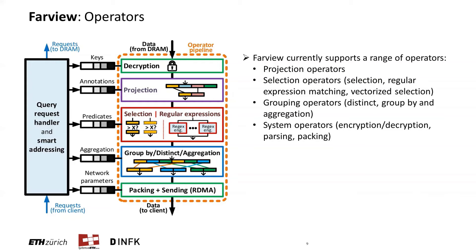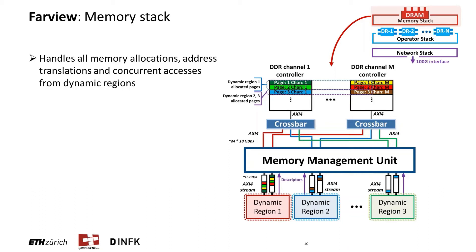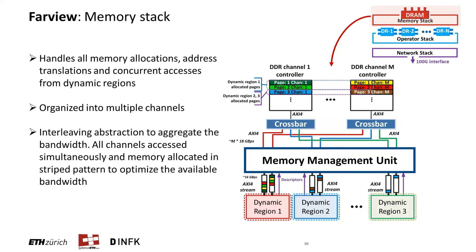The memory stack implements the actual buffer pool using the onboard DRAM attached to the FPGA. It handles all memory allocations, address translations, and concurrent accesses from dynamic regions. The memory is organized into multiple channels, and the memory management unit in Farview uses an interleaving abstraction to aggregate bandwidth by accessing all channels simultaneously and by allocating memory in a stripe pattern across all available channels. This allows us to take advantage of full memory bandwidth, which is very useful especially in filtering applications that can discard a lot of data and process it at higher rates than the available network bandwidth, directly reducing overall response times.